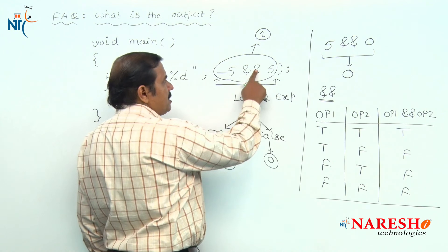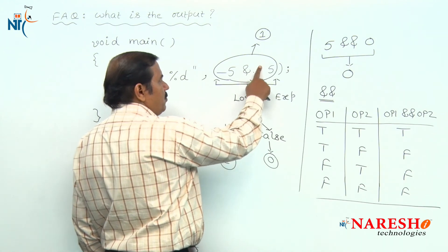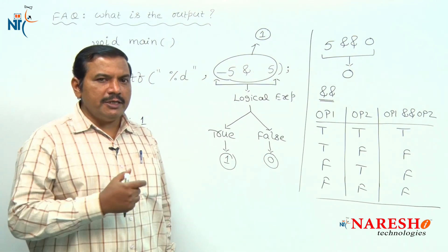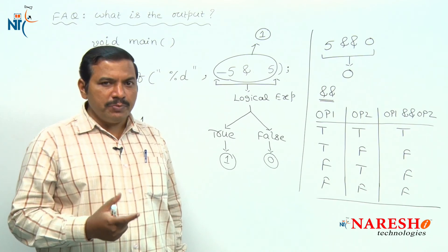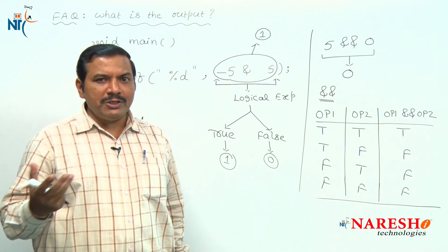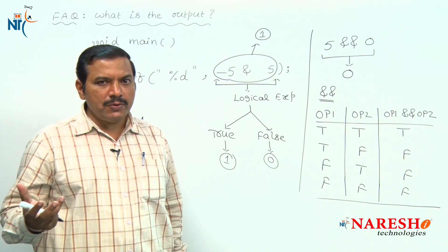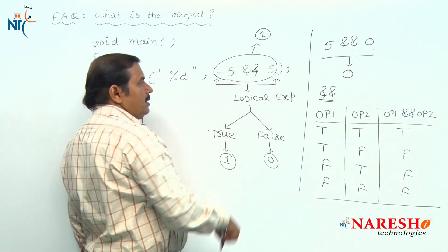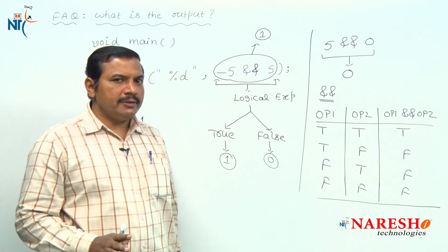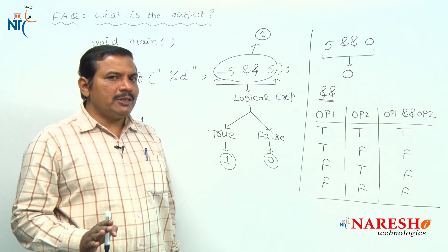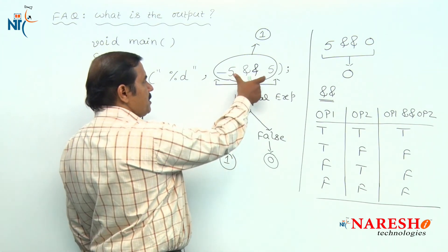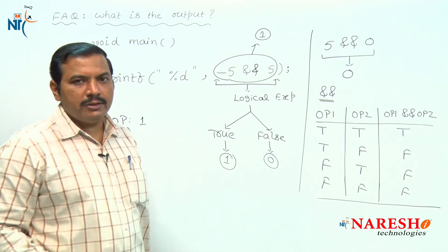Instead of two ampersand symbols, if only one ampersand symbol is given, then it works as bitwise AND — the operation is different. So, the given operator symbol here is logical AND, and in the case of logical AND, the value of this expression is 1.